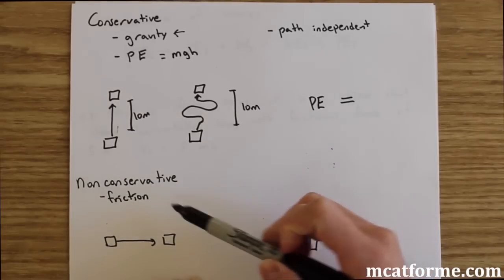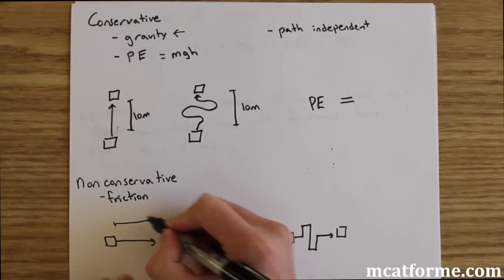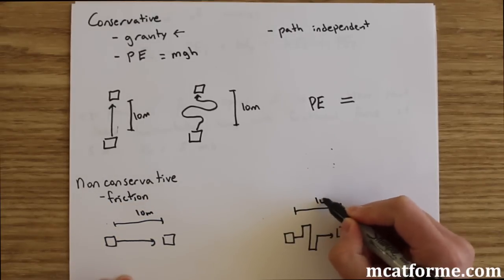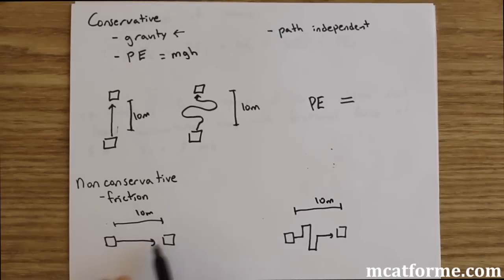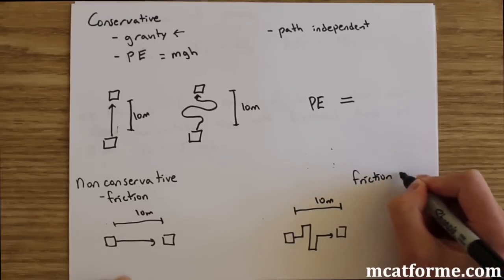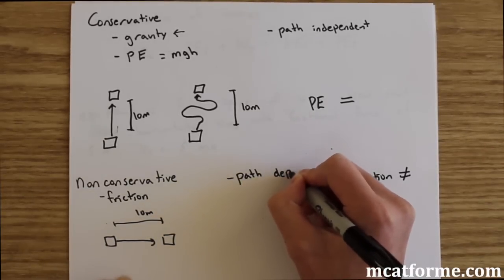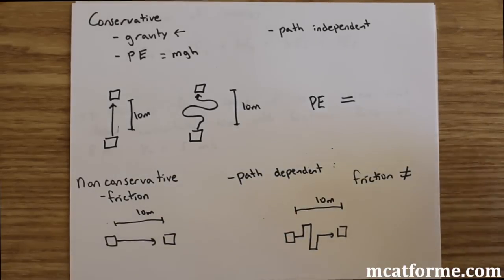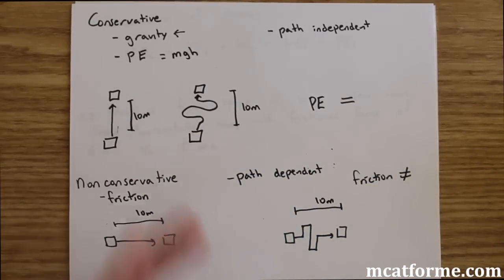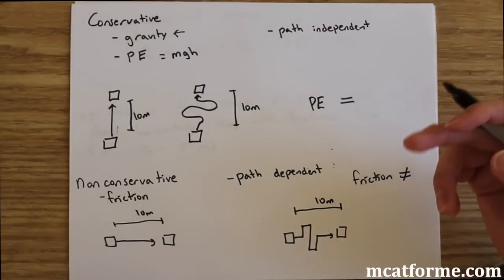In contrast, friction is a non-conservative force and is path dependent. If one object moves straight across 10 meters and another takes a longer winding path covering the same displacement, the friction experienced is not the same because friction depends on the actual path traveled. So be clear on the distinction between path independent and path dependent forces.